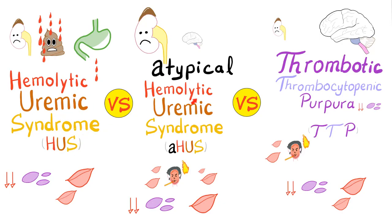Hey, it's Medicosis Perfectionals, where medicine makes perfect sense. Today we'll continue our bleeding and coagulation playlist. We have a comparison among three diseases: typical hemolytic uremic syndrome, atypical hemolytic uremic syndrome, and thrombotic thrombocytopenic purpura.